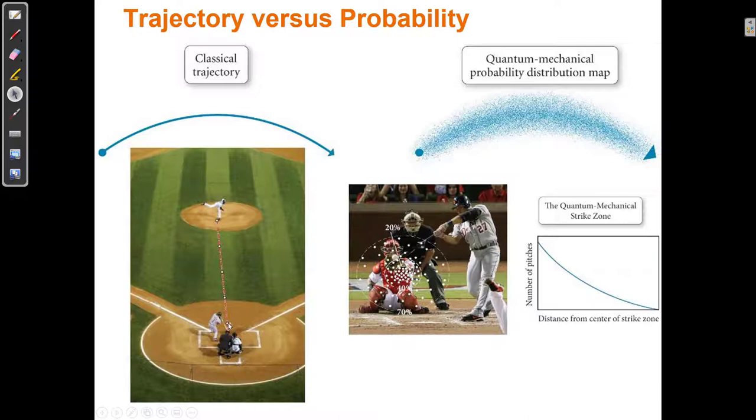So we can only say that there's a probability of where the particle is. We can't say exactly where the particle is. So with a baseball, we can say there's a 100% possibility that the baseball is right here. With an electron, we cannot say that. It does not have a classical trajectory. It's not a determined particle.